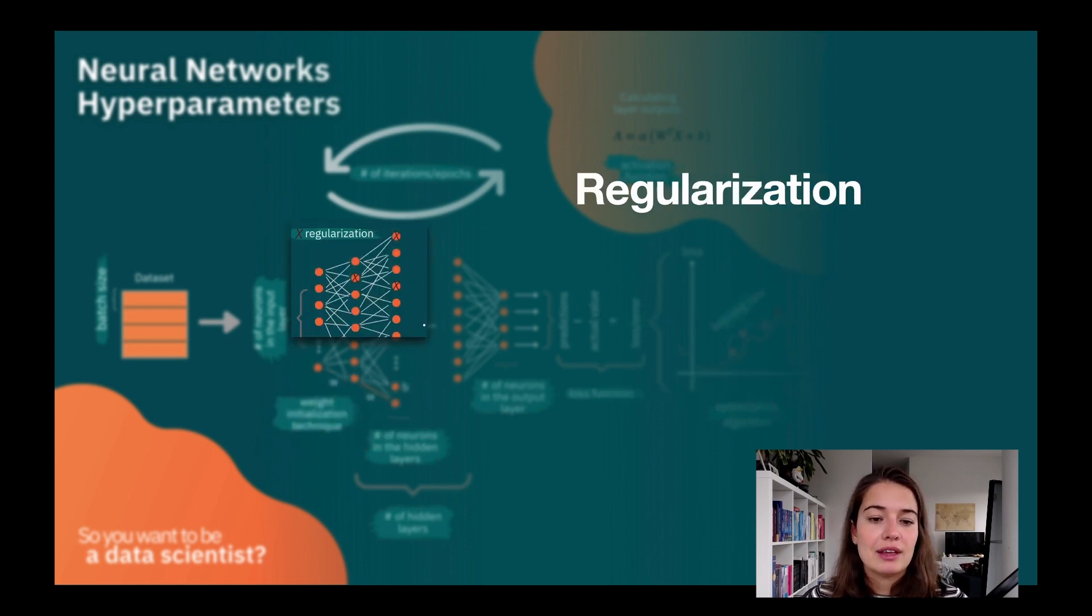The last one is regularization. Regularization is a way to cancel out some of the neurons. You might say, okay, I'm not going to care about these little guys here for this run. This makes for a simpler network, and we normally use this to deal with overfitting.